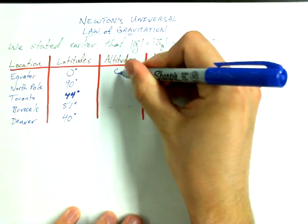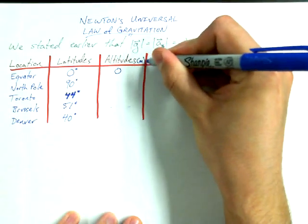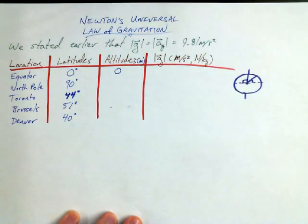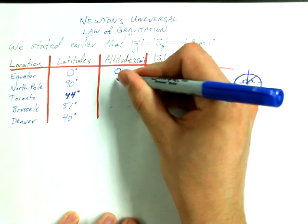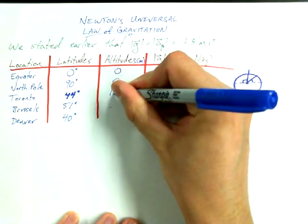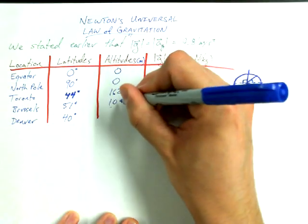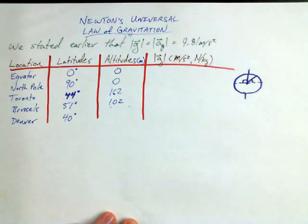In any case, the equator is at an altitude, and I should say in meters. Roughly, we're going to say the equator is at an altitude of zero meters relative to sea level. That's what we're going to measure our altitudes in, because it's a reasonable thing to measure with respect to. The North Pole, also approximately zero. Toronto, 162 meters. Brussels, not far off of Toronto, a little bit lower, 102 meters.